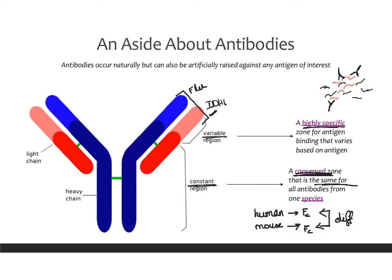Now, if this was an IDH1 antibody made in a mouse, we know that all of the constant regions are mouse constant regions. We can use a second antibody that binds specifically to mouse constant regions and attach it to our first one. These chains of antibodies allow us to specifically identify IDH1 and where it is, or pull out IDH1 and separate it from the rest of the protein soup. Antibodies are very powerful tools in research, and it's important to understand those two zones and how they can be used.